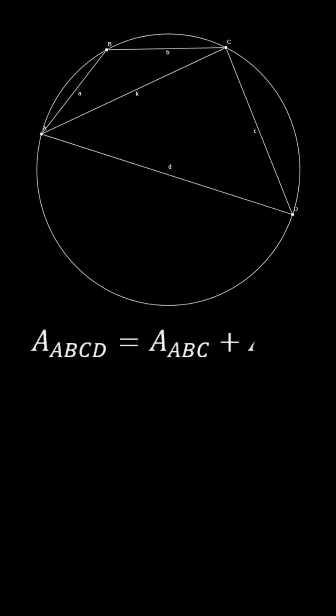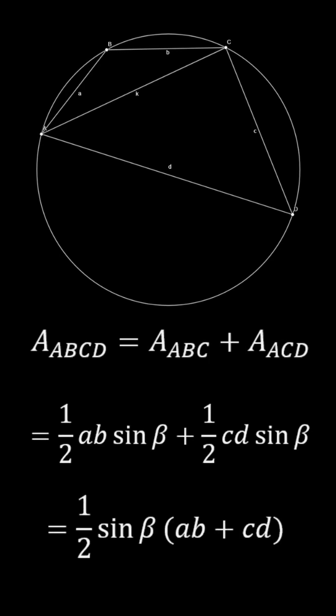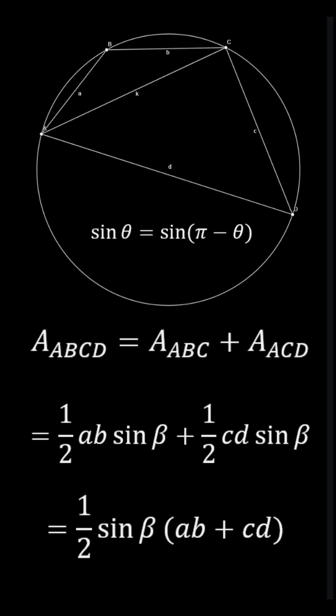We can express the area of the whole shape as the sum of the triangle's areas, using the formula ab sin(θ)/2. Since the two opposite angles of a cyclic quadrilateral are supplementary, the sine of the angles will be equivalent, leading to the result on screen.